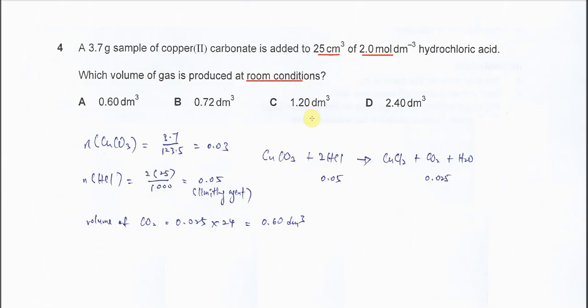So first, we need to know what is the gas that's produced. Copper carbonate reacts with HCl to form copper chloride, CO2 gas, and H2O. H2O at room condition is liquid, so this one is not considered as gas. The only gas that is produced is CO2.